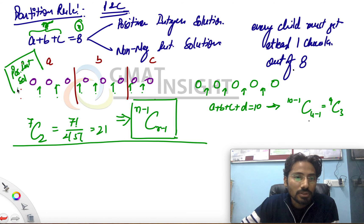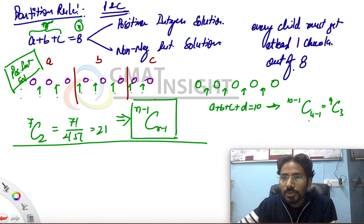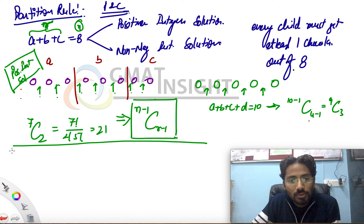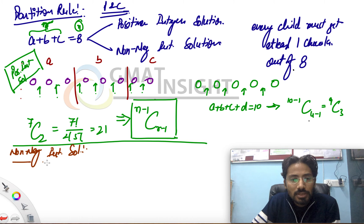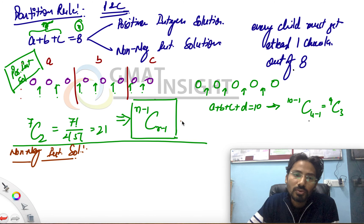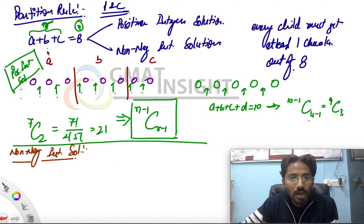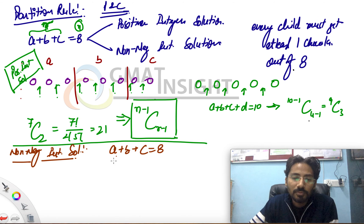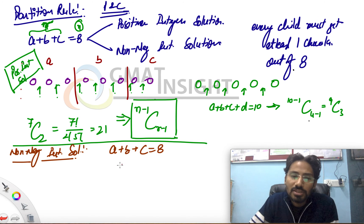Now the next question is to find out the non-negative integer solutions. Non-negative integer solutions means the value of the variables can be anything from 0 to n. Taking the same example again: a + b + c = 8, where the condition of every child getting at least one is not given — meaning the value of a, b, and c may be 0 as well.